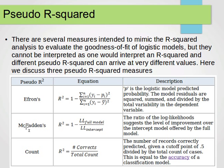The other way, McFadden's formula, is R-squared equals one minus the log likelihood of the full model over the log likelihood of the intercept model. So the ratio of the log likelihoods suggests the level of improvement over the intercept model offered by the full model.